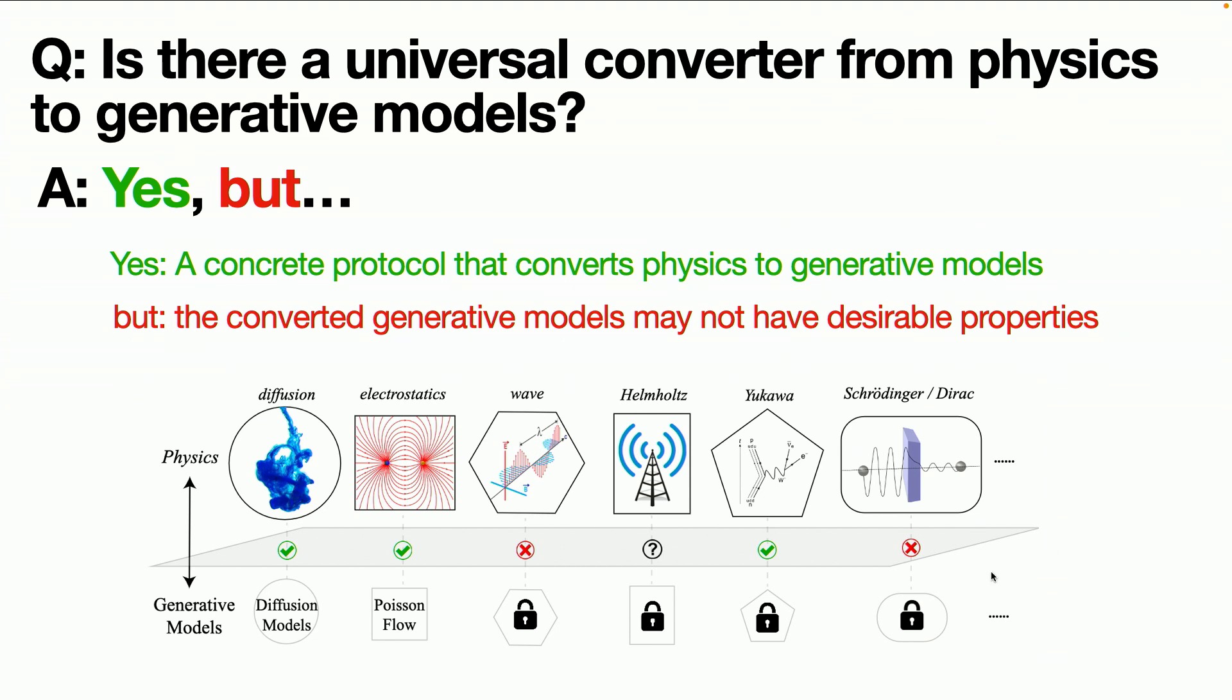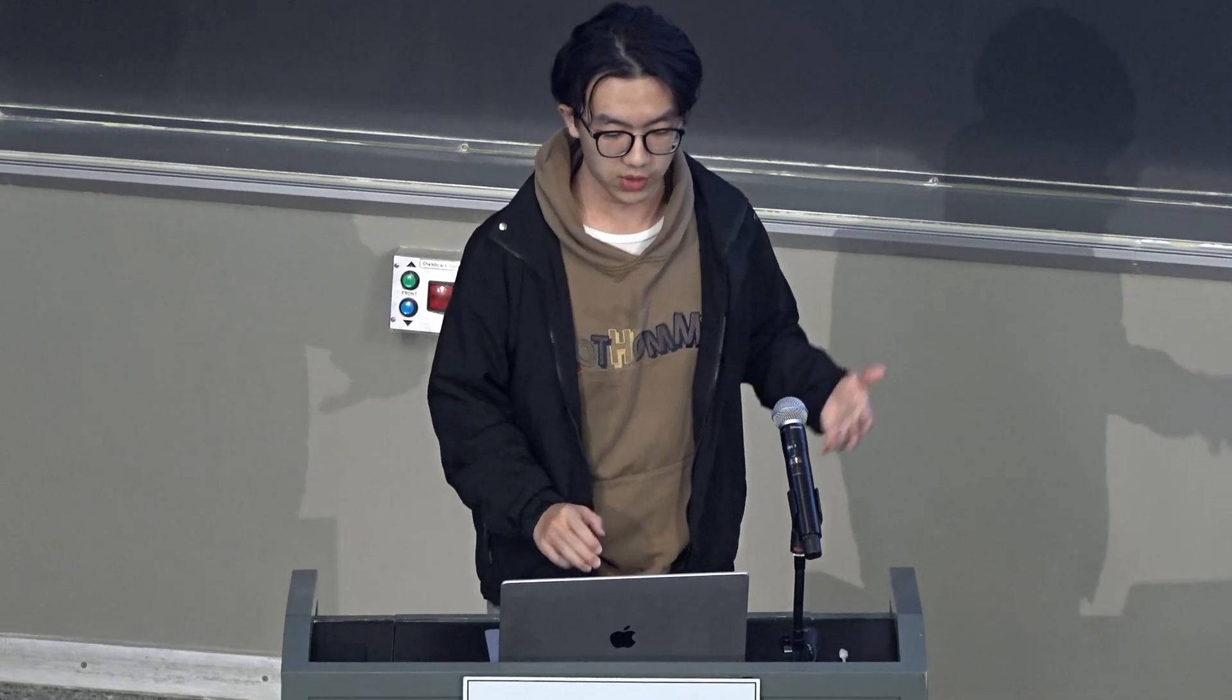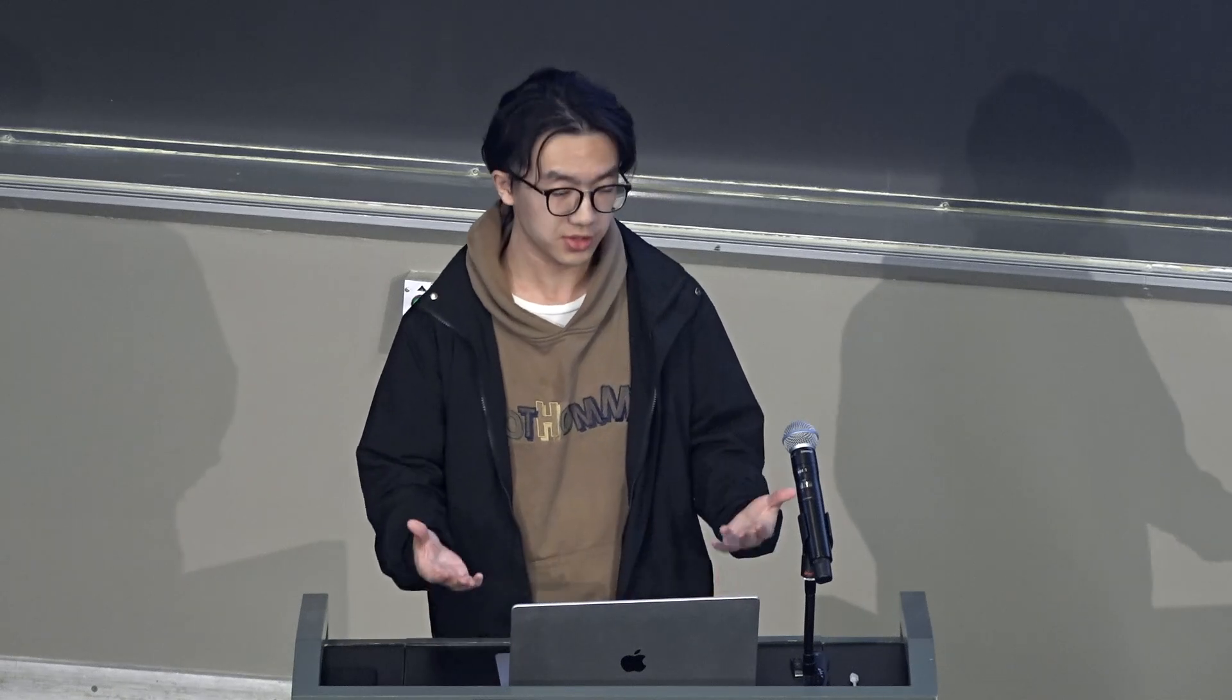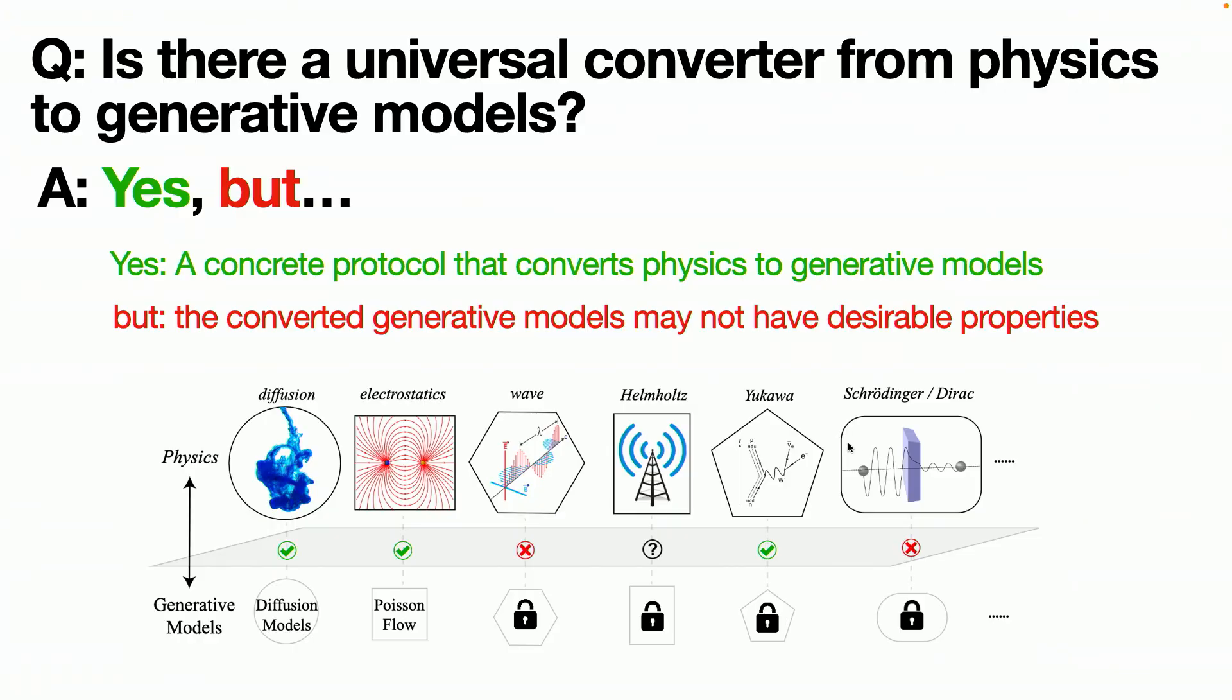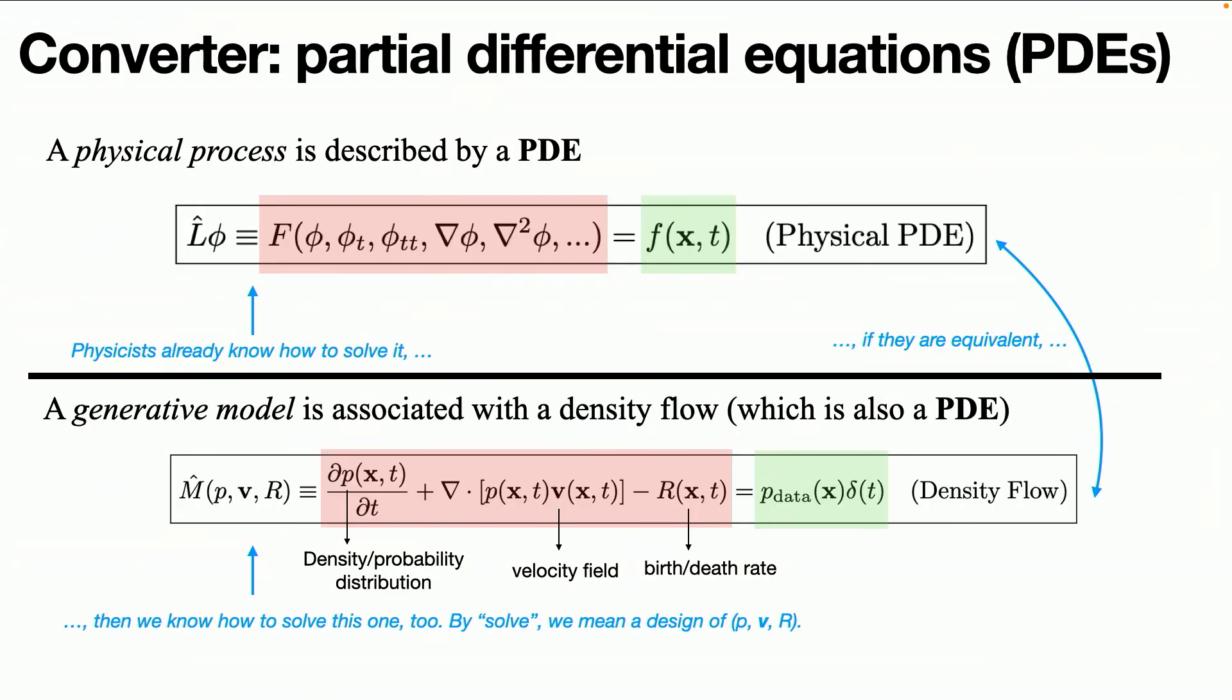So here's just a summary of the results. It's our expectation that diffusion equation and Poisson equation can be converted into generative models. That's why people already discovered them. But people haven't discovered wave generative model yet. And I'll tell you a reason why people haven't discovered that, because it's not desirable. But there are other equations, some of them are desirable, some of them are not desirable, but it's interesting to notice that there are even new equations that are desirable.